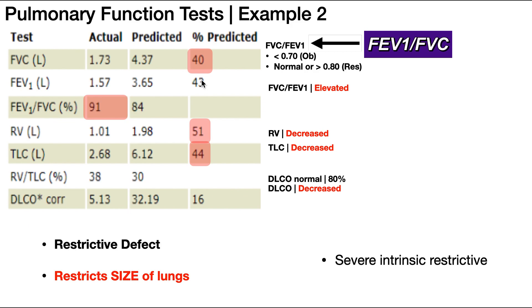This value should also be close to 100%. Then we have the FEV1 to FVC ratio. Normally this ratio should be about 0.8, or 80%. You can see here that this person's predicted ratio is 84% — so 80 give or take a little bit — but their actual is elevated.